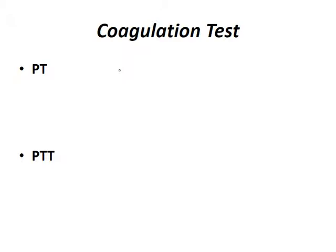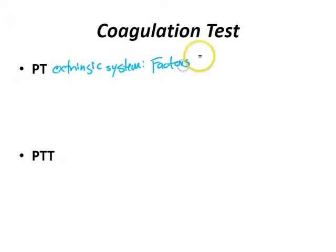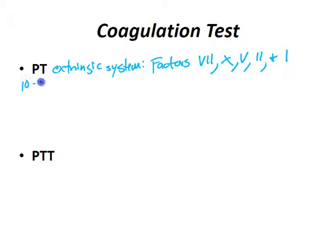The PT is the prothrombin time. That evaluates the extrinsic system. So that means factors 7, 10, 5, 2, and 1. The normal prothrombin time is 10 to 12 seconds — that's normal.